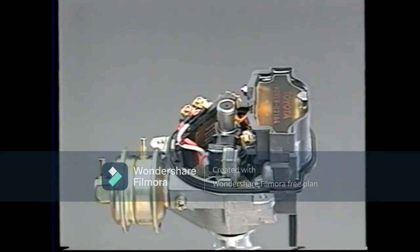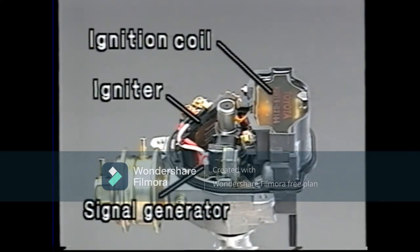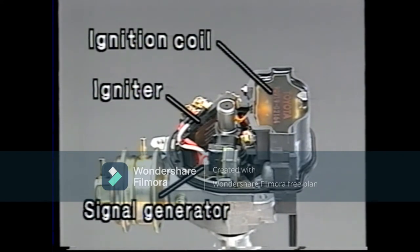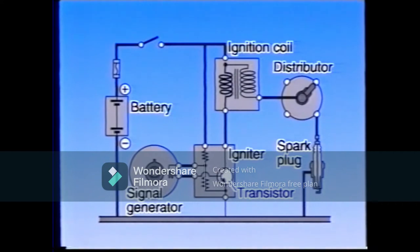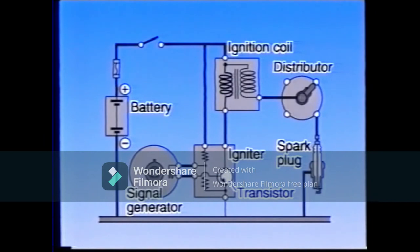An ignition coil, a signal generator, and an igniter are integrated with the distributor. In the transistorized ignition system, the ignition signal from the signal generator is transmitted to the transistor in the igniter. This transistor turns the primary current in the ignition coil on and off.